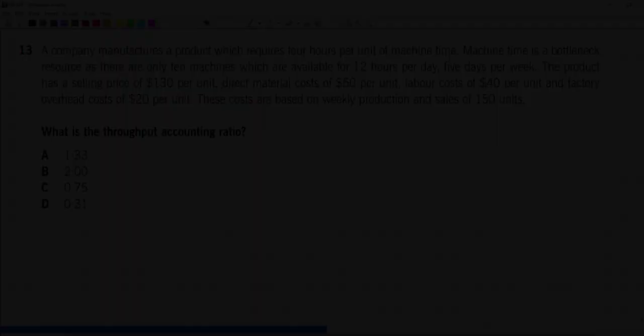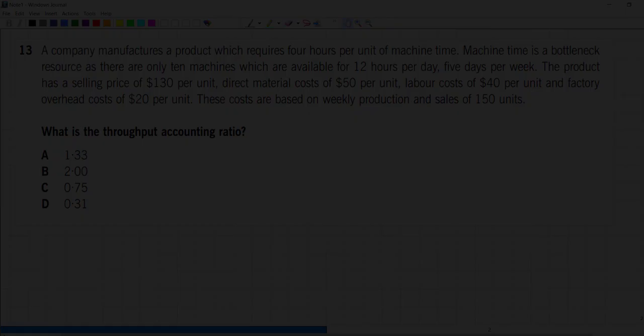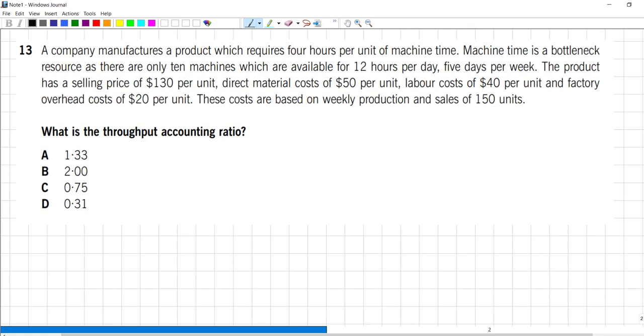Alright, my approach. First of all, it's four hours, lots of data buried in these sentences. The topic is throughput accounting ratio. I would consider this a difficult question and potentially flag it and come back later, depending on how I was doing and what stage of the exam I was in. But when I come back, it's time to do it. So I'm not going to get lost in that big paragraph.